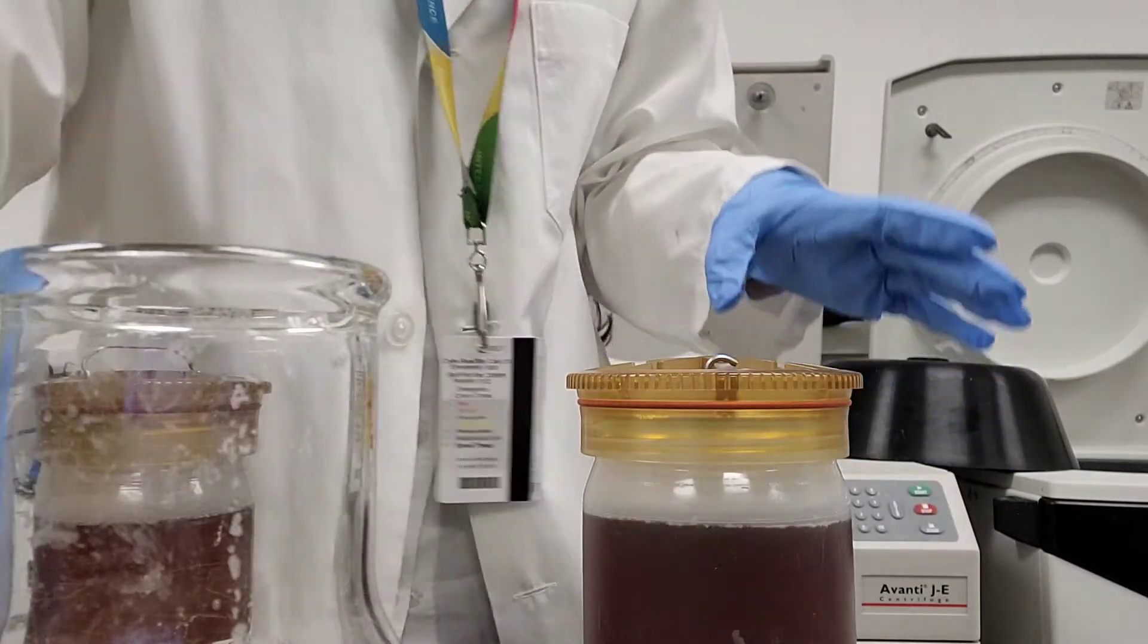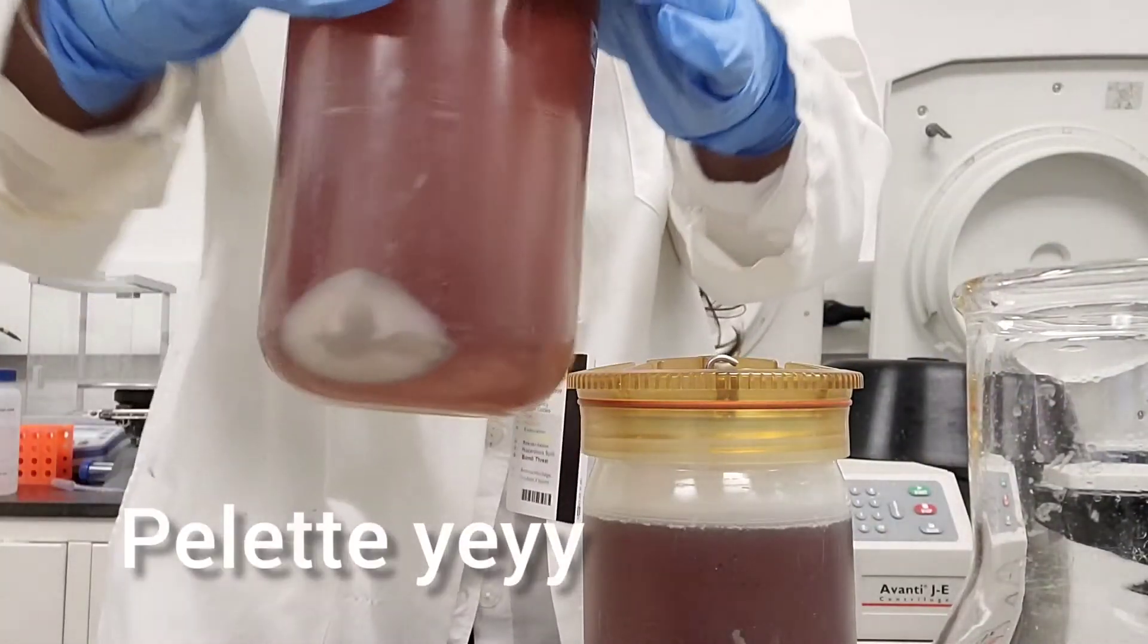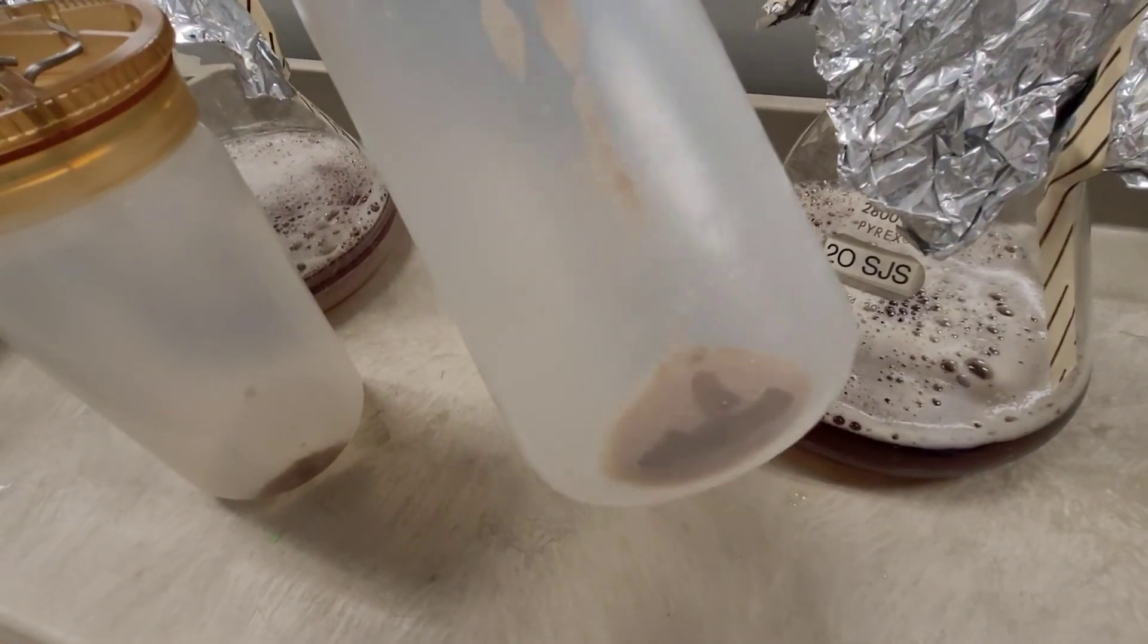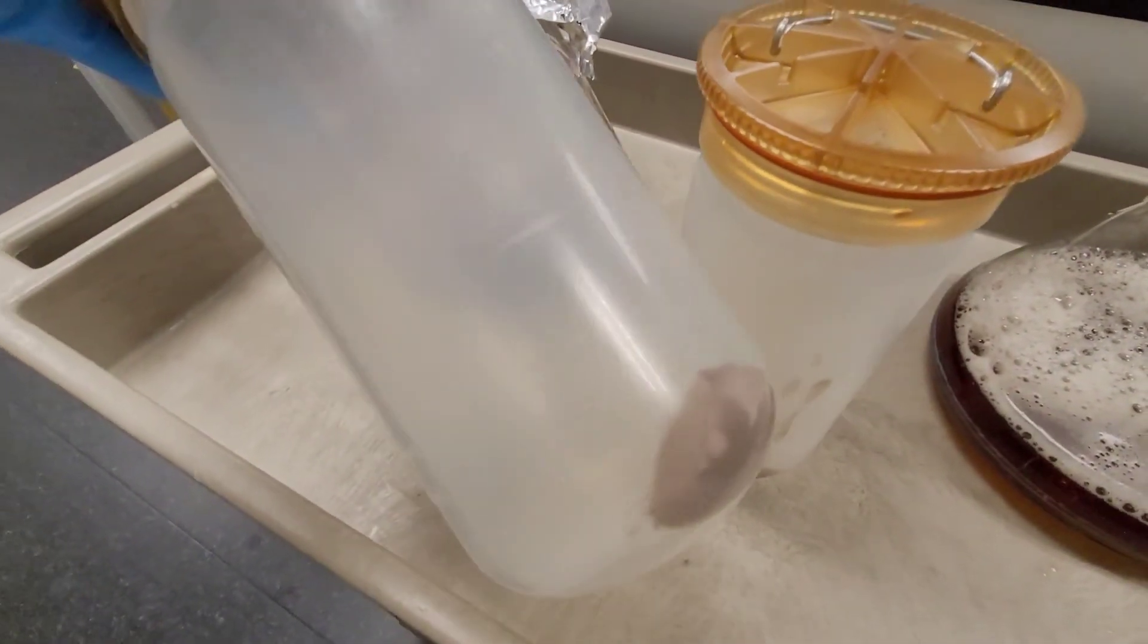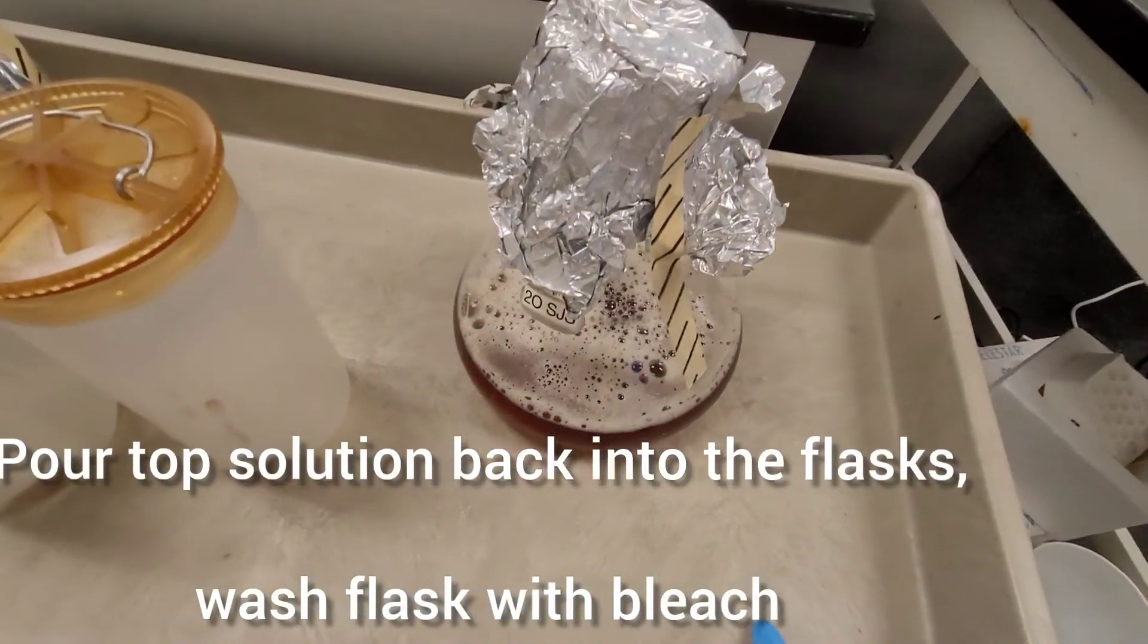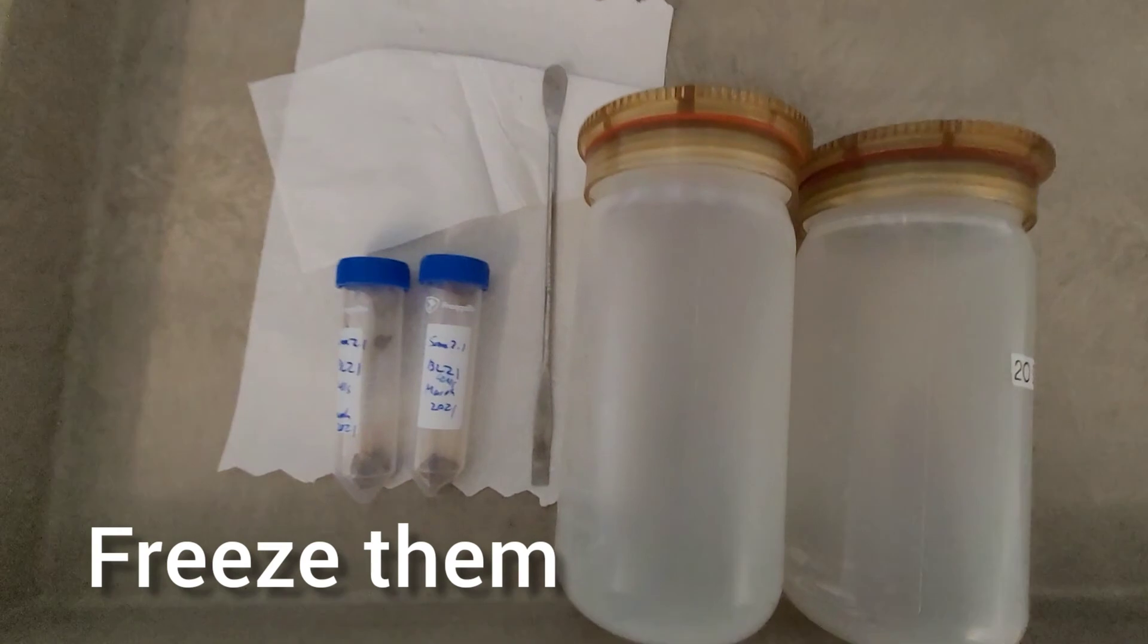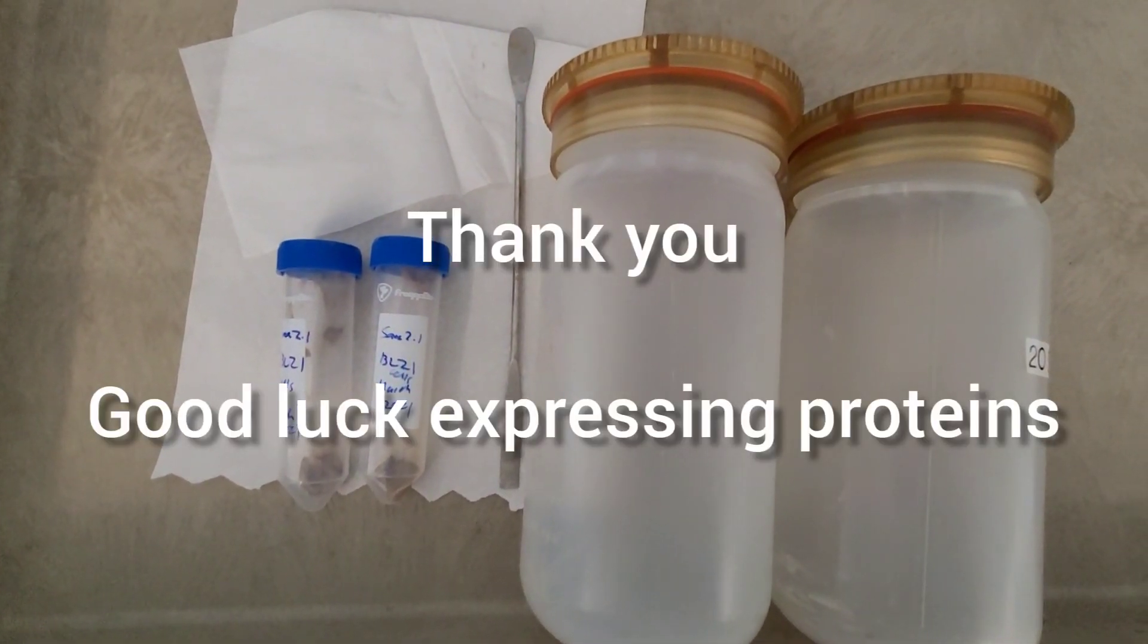Clearly you should be able to see your bacteria all collected as a pellet in the bottom, which is exactly what you want. Then you dump the supernatant or the top solution back into the one liter flasks. Then you want to transfer your pellet to tubes and put them in the freezer and clean everything with bleach and water. Thank you so much for watching and good luck expressing proteins.